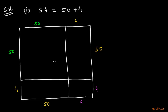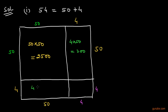Now we shall find the area of these 4 parts of the square. The area of the first part will be 50 into 50, which means 2500. The area of the second part will be 4 into 50, which means 200. The area of the third part will be 4 into 4, which means 16.